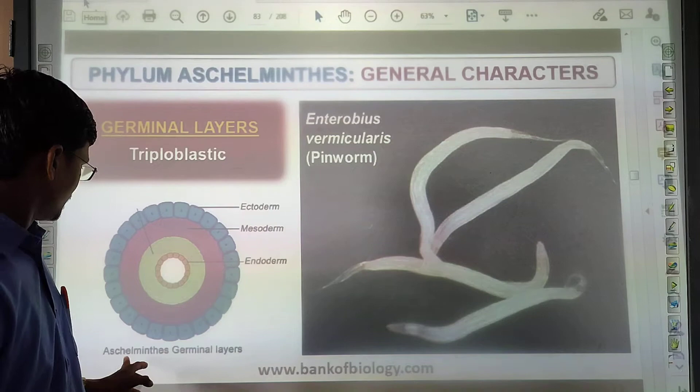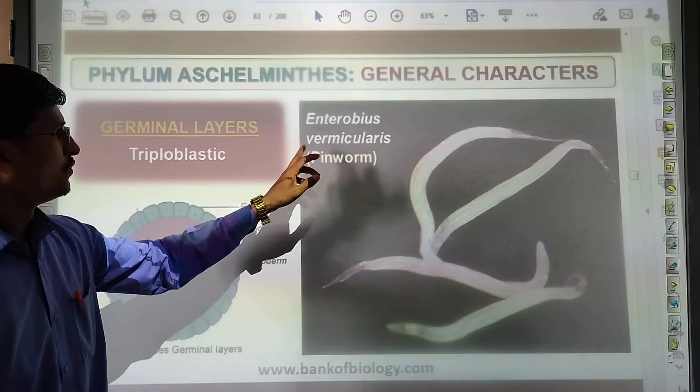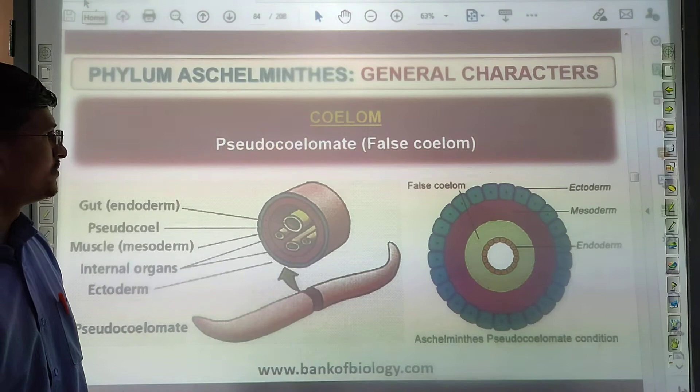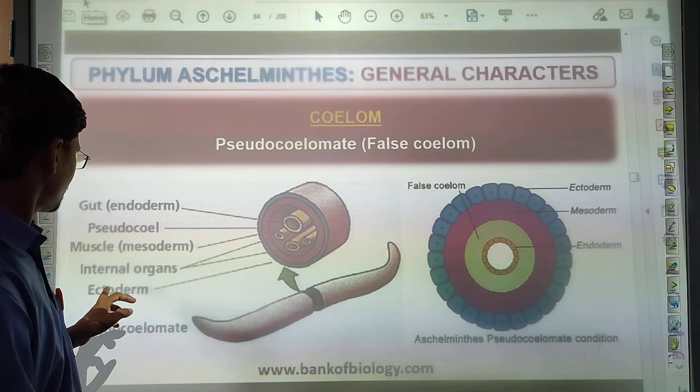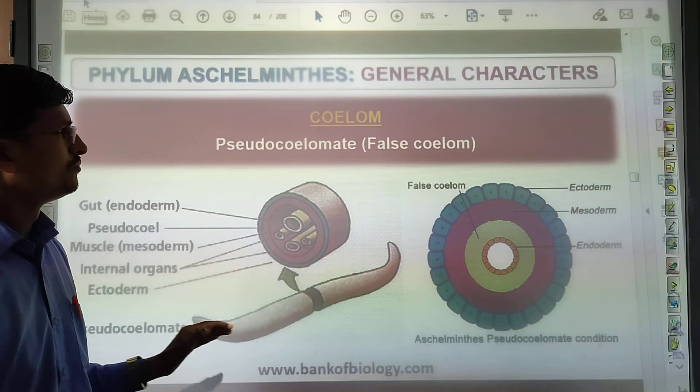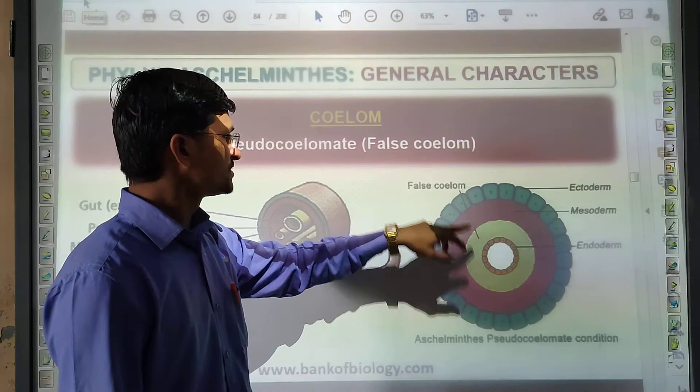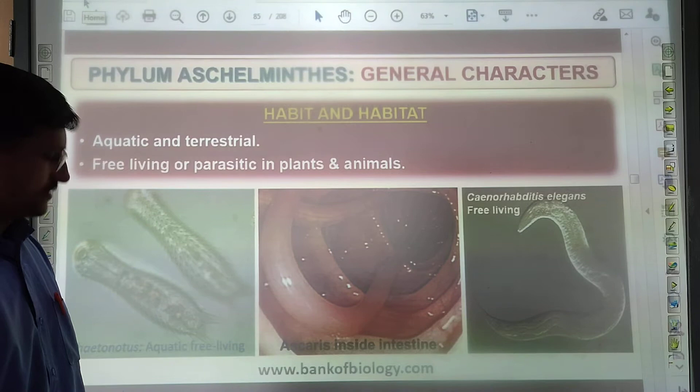Aschelminthes are triploblastic. The body cavity is pseudocoelomate — that is a false coelom. So the body organization type is pseudocoelomate. They are both aquatic and terrestrial in habitat.